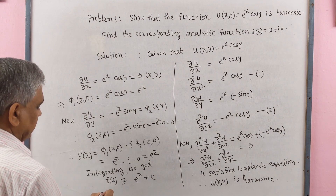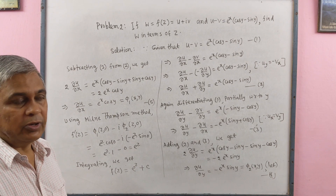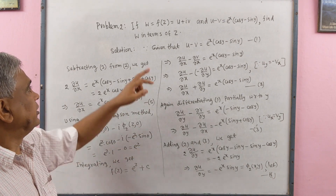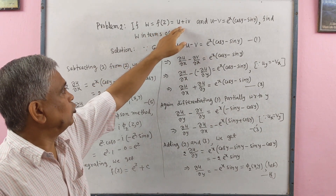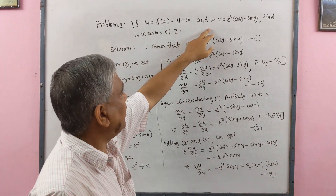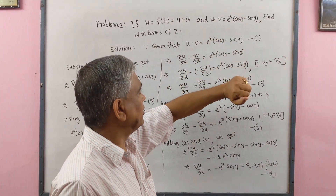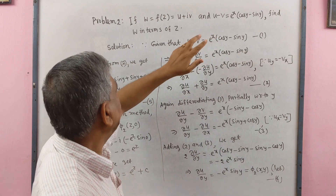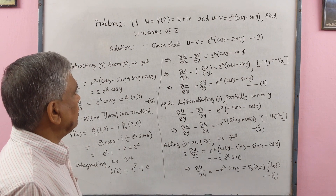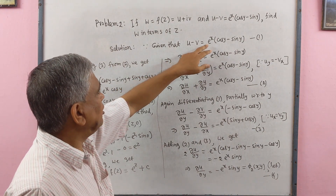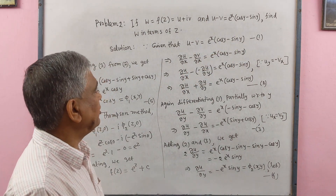Now we solve Problem 2. Given w = f(z) = u + iv, and u − v = eˣ(cos y − sin y), find w in terms of z. Here the given equation is u − v = eˣ cos y − eˣ sin y. This is equation number 1.